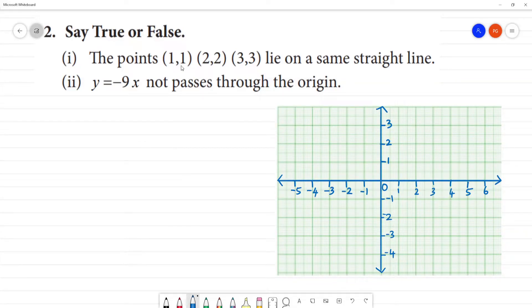Straight true or false: the points (1,1), (2,2), (3,3) lie on the same straight line.